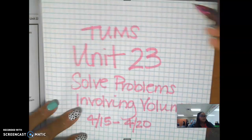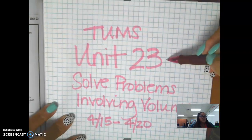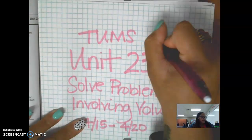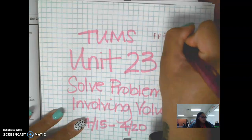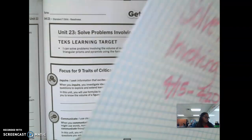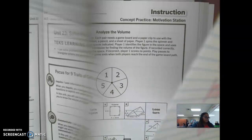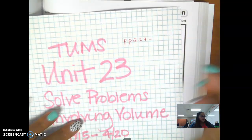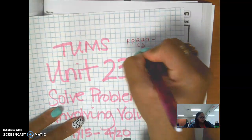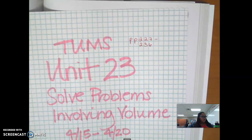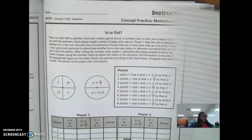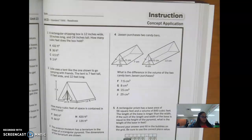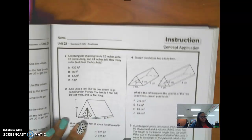All right, we're going over TUMS Unit 23 in our book, pages 227 through 236. I'm going to go over the homework questions that you will have to submit in Skyward. The notes should have been done in class already, so let's get started on page 231.